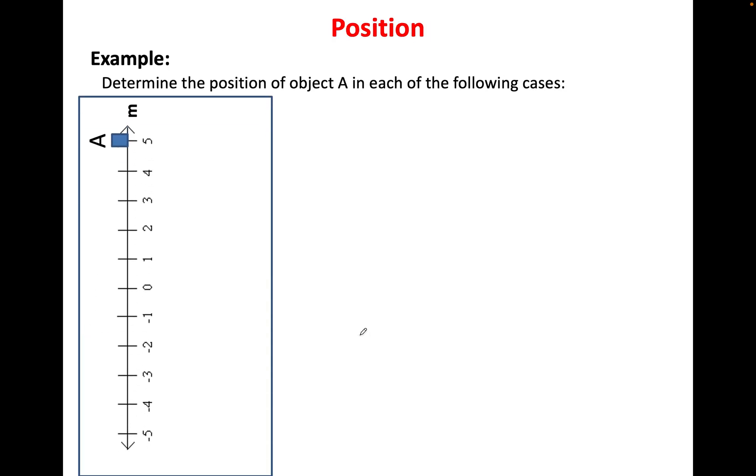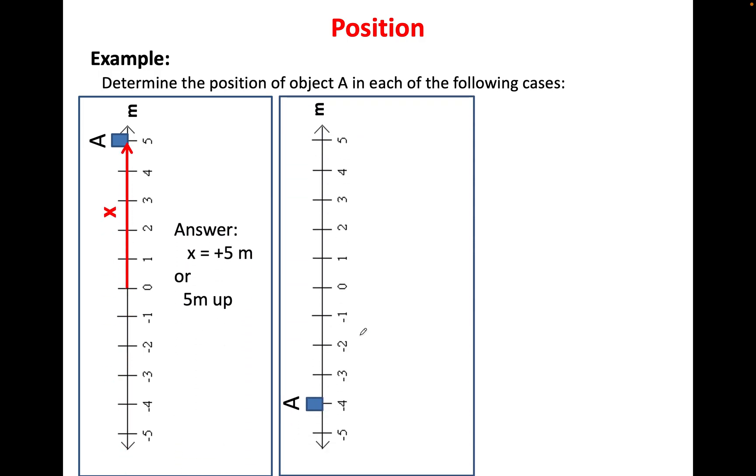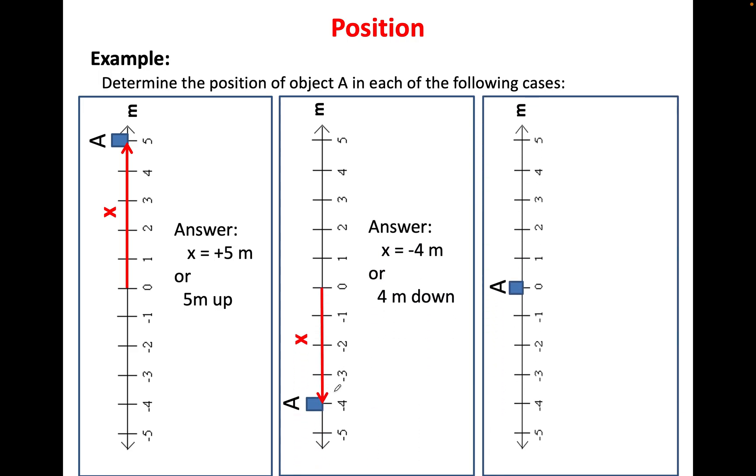Another example here, from this one, a 5 meters up, or positive 5, 4 meters down, negative 4, as you can see. And this, again, is 0. So, this is what position is. How far away you are from the origin.